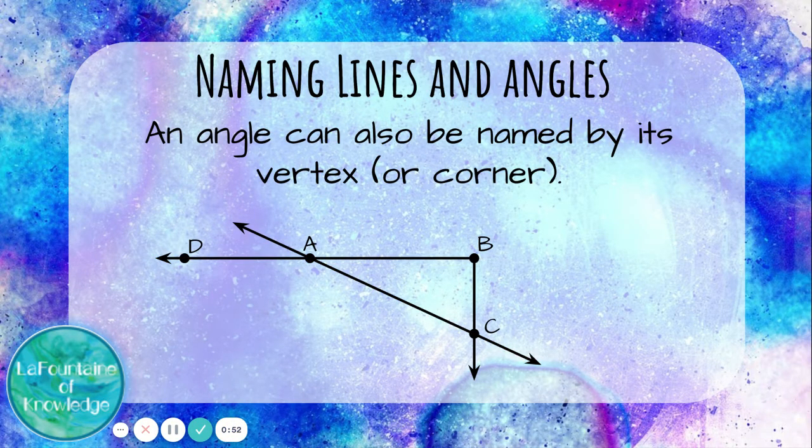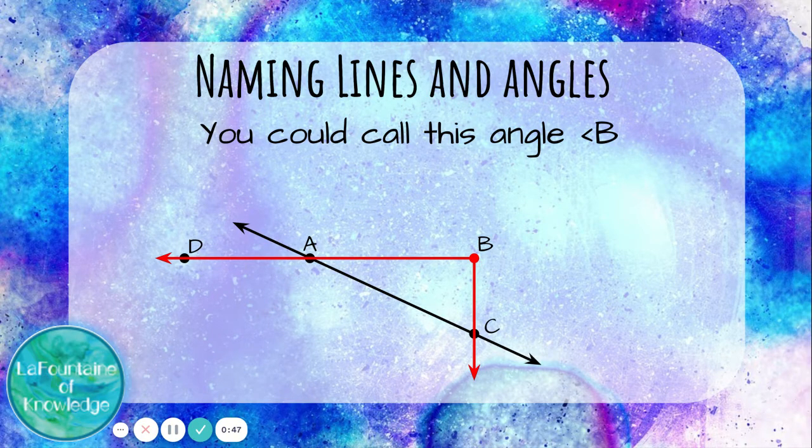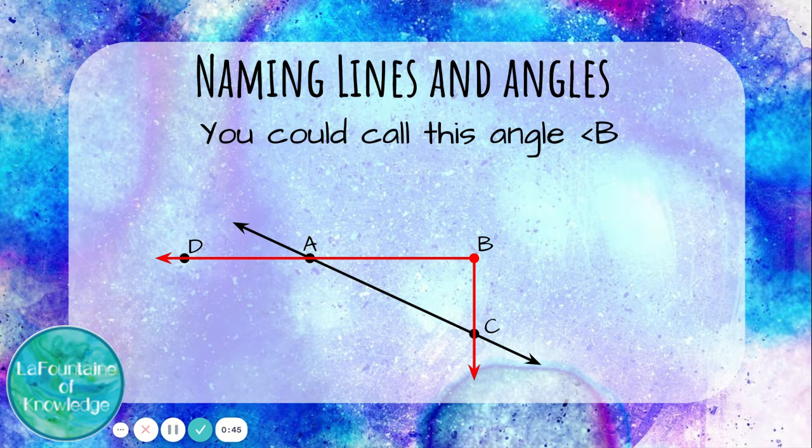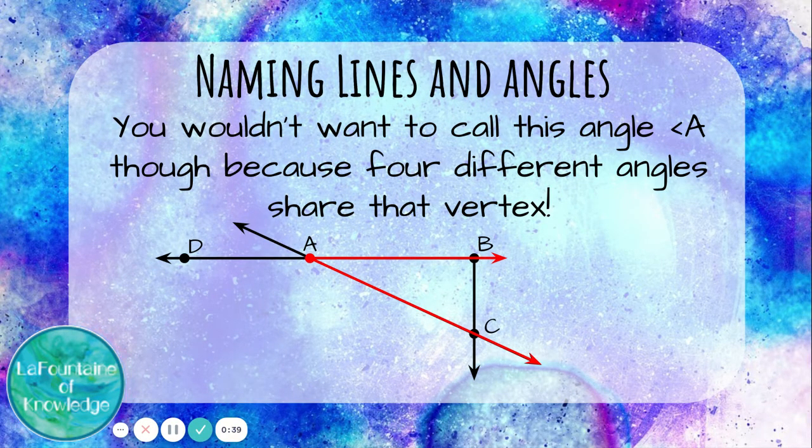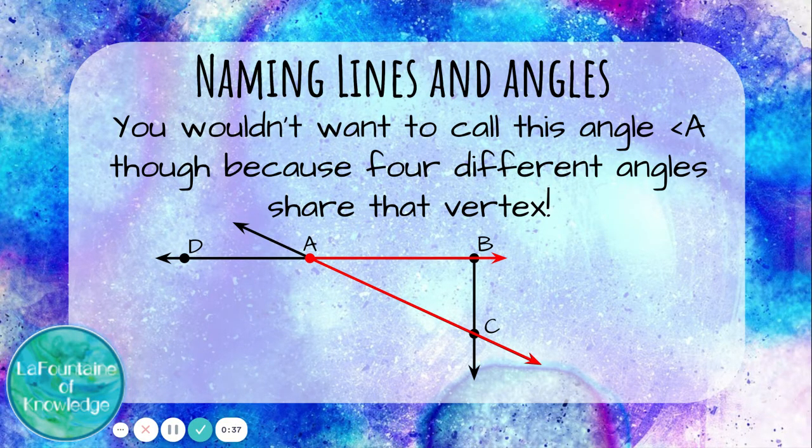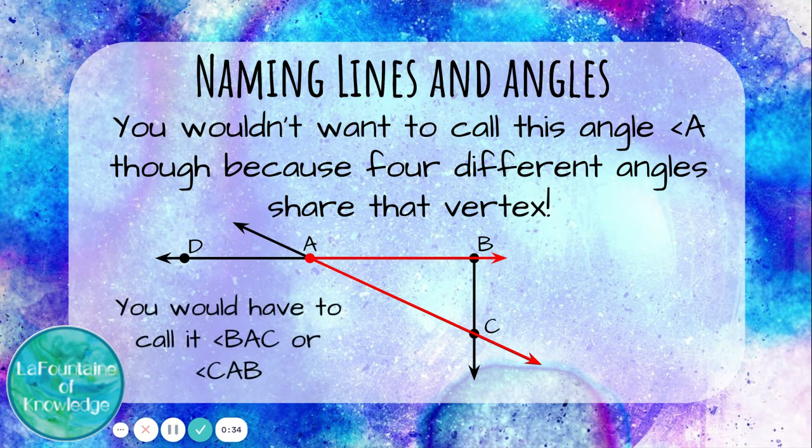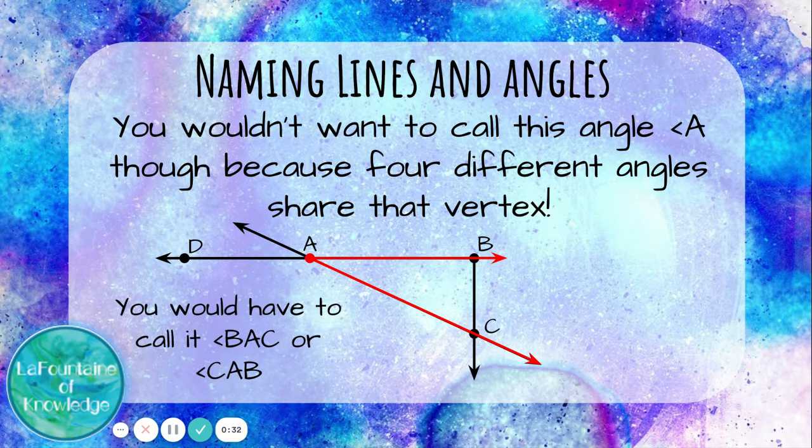An angle can also be named by its vertex or corner. For example, you could call this angle angle B. But you wouldn't want to call this angle A because four different angles share this vertex and we wouldn't know which one you were talking about. We would have to call this angle BAC or angle CAB.